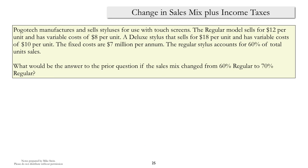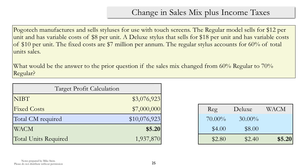Let's add an additional complication: what happens if the sales mix were to change from 60% regular to 70% regular? The first step is to recalculate the weighted average contribution margin using the new sales mix of 70% and 30%. The total contribution margin required stays the same, but we now use the new weighted average contribution margin to get a new total number of units required.